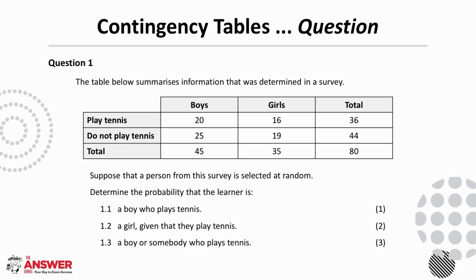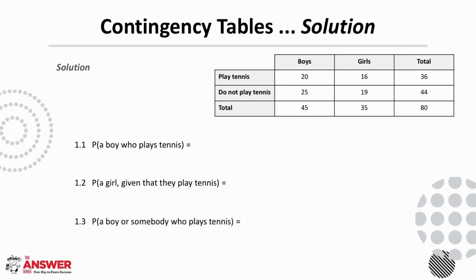Pause the video now to give this a read through and then give it a go. If we consider a person selected at random, we find the probability of them being a boy who plays tennis by following down the boys column and along for plays tennis to see where they overlap. The probability is 20 over the total number of learners, which is 80, and this simplifies to a quarter.